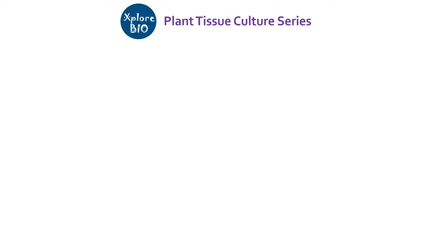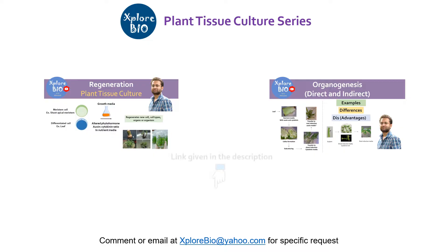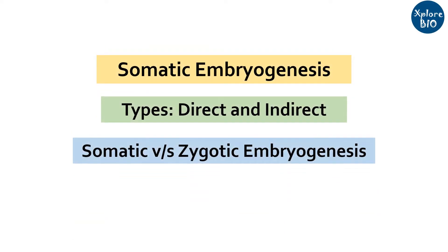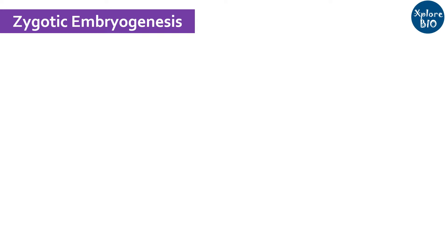Hello and welcome back to the plant tissue culture series of Explore Bio. In my previous videos I have talked about regeneration, organogenesis and its types. If you want to learn more about them you can check out their link in the description below. In today's video I will talk about somatic embryogenesis, its types, how it is different from zygotic embryogenesis, and why somatic embryogenesis is important — their application part. Before directly jumping onto somatic embryogenesis, one should know what a zygotic embryo is.